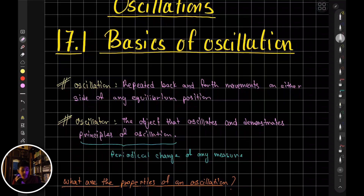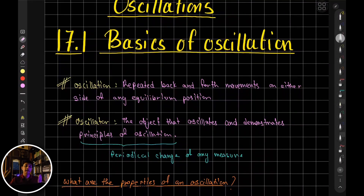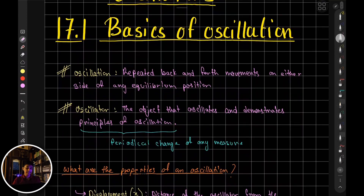So the definition of oscillation is: repeated back and forth movement on either side of an equilibrium position. If an object is moving back and forth from an equilibrium position, that motion is known as an oscillation.